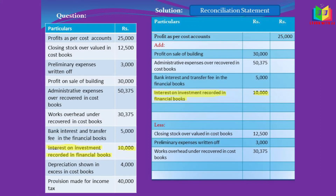The next item is interest on investment recorded in the financial book. It is financial income and it is recorded in the financial book, so the income is understated in the cost book. This will reduce the profit, so in order to rectify that, we will add this.